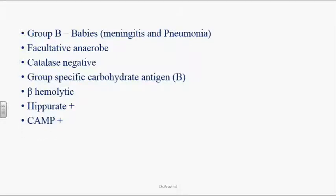It is CAMP positive. CAMP stands not for cyclic AMP — the CAMP test is named after the scientists who invented it: Christie, Atkins, Munch, and Petersen. In this test, whenever Group B Streptococci are inoculated adjacent to Staphylococcus aureus colonies on blood agar, you can see enhanced beta-hemolysis. That is what we call the CAMP factor, and it is a diagnostic tool for identifying Group B Streptococci.